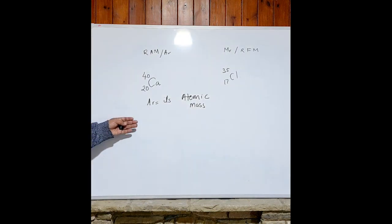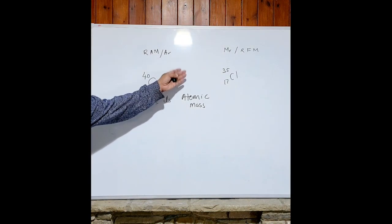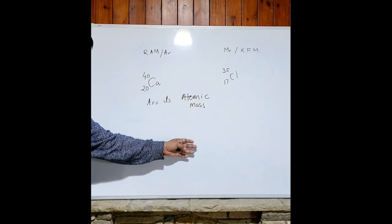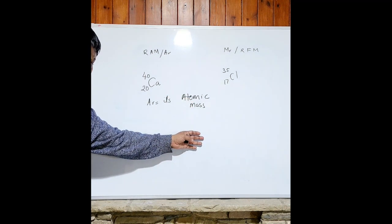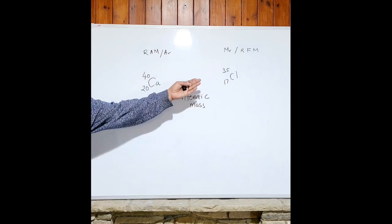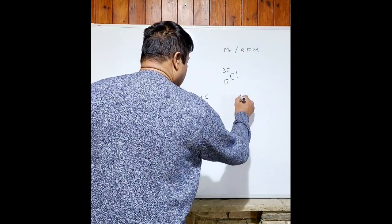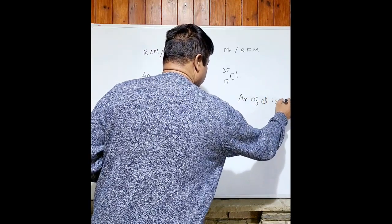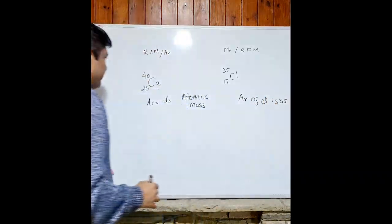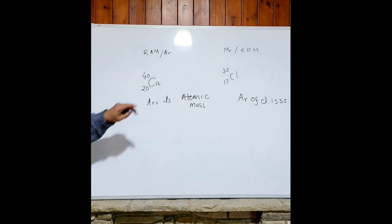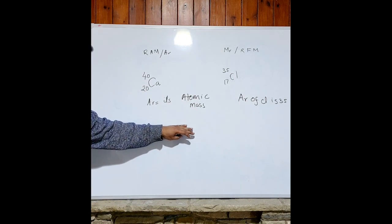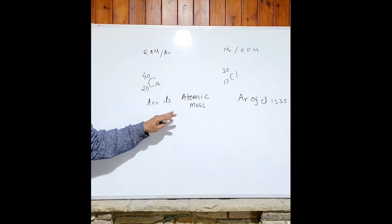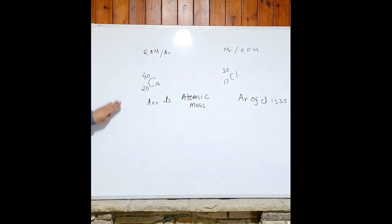You can figure out the AR from the periodic table. So, can you tell me what's the AR of chlorine? It's easy — the AR of chlorine is 35. AR and RAM are the same thing. We use AR for elements that are in a monoatomic state.